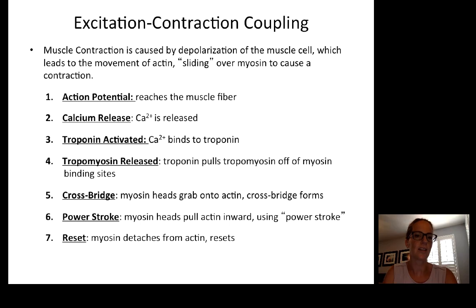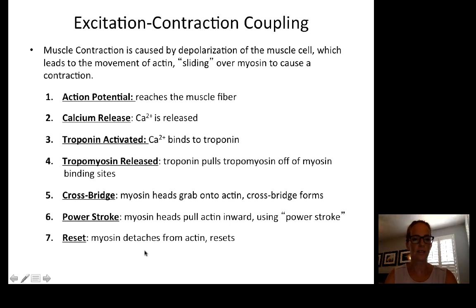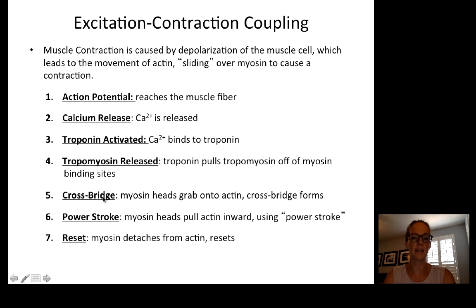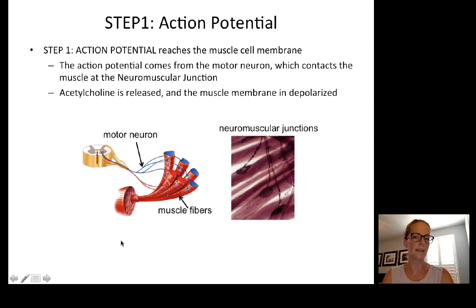Now let's talk about excitation-contraction coupling. Muscle contraction is caused by activation — depolarization — from the nervous system, and the muscle responds by contracting. The steps are: an action potential from the nervous system causes calcium release, which activates troponin (the lock), releasing tropomyosin (the chastity belt). Tropomyosin is pulled off the myosin binding sites on actin, the myosin heads grab onto actin, move it in a power stroke, and then everything resets.